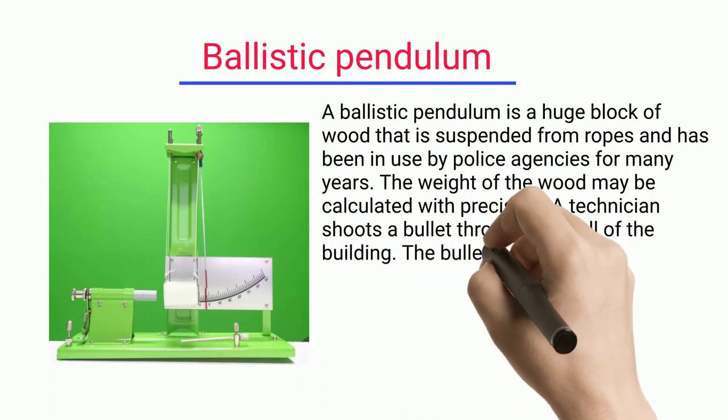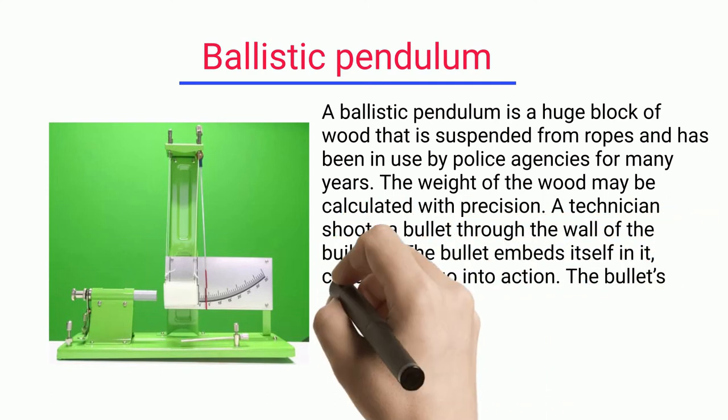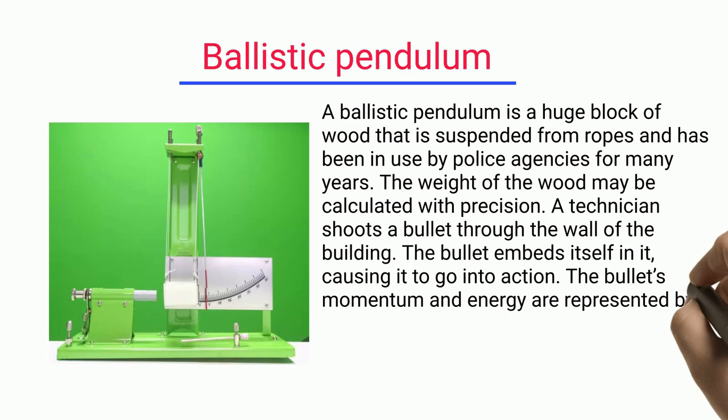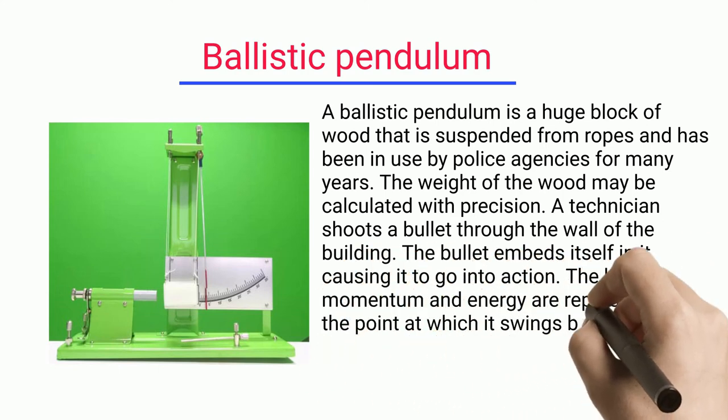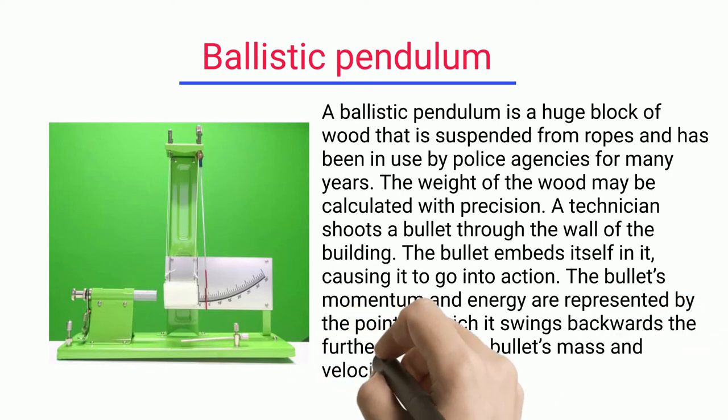The bullet embeds itself in it, causing it to go into action. The bullet's momentum and energy are represented by the point at which it swings backwards the furthest. Using the bullet's mass and velocity, the technician may then calculate the bullet's velocity.